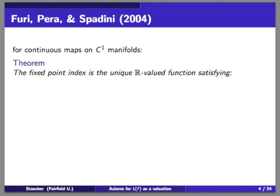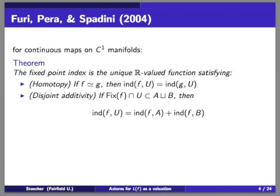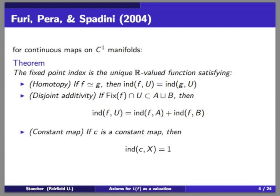The other system is by Furi-Pera-Spadini for continuous maps on differentiable manifolds. They showed the fixed point index is the unique real-valued function satisfying: homotopy invariance; disjoint additivity — if you have two disjoint sets, the index over the whole set equals the sum of the two; and a property about the constant map, where the index is one. One interesting point: Furi-Pera-Spadini only assume their invariant is real-valued, and it turns out to be integer-valued as a consequence of the axioms. Arkowitz and Brown assume integer-valued up front, though that assumption may not have been necessary.